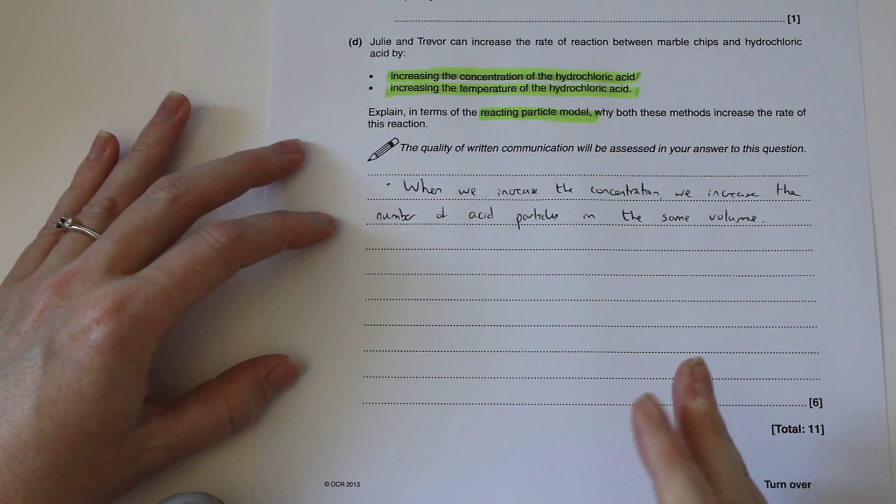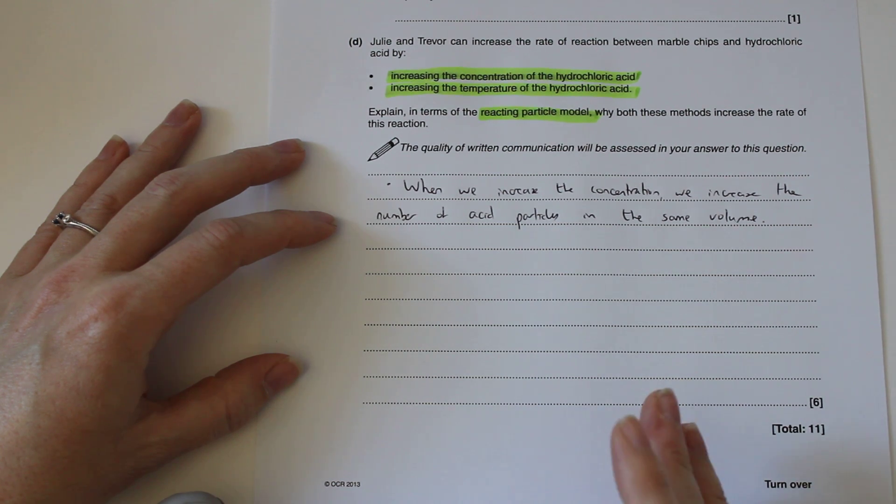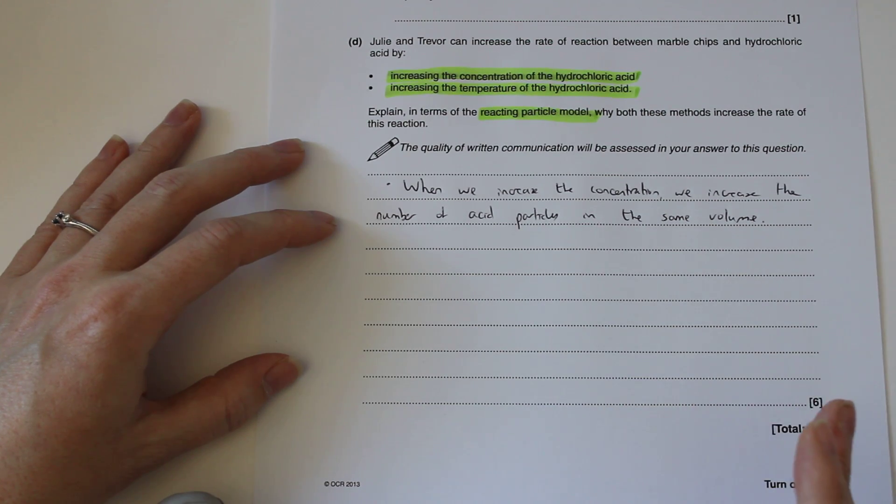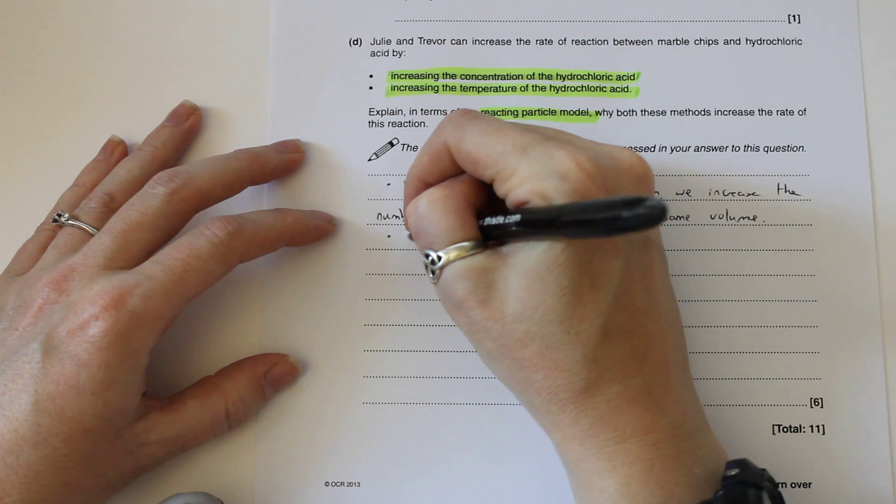If you just say that the number of acid particles or the amount of acid particles increase, then you're not going to get the mark for that bit. You've got to specify that it's increasing the number of acid or the amount of acid particles in the same volume.